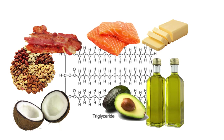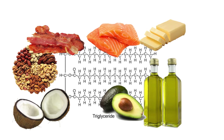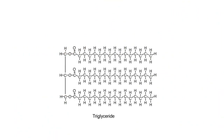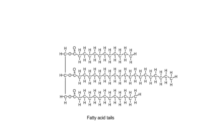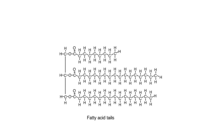And animal fats like butter, bacon fats, or the healthy fats found in salmon. These fats and oils are obviously vastly different from each other, but they are all made of triglycerides. The difference lies in the fatty acid tails, which can be different lengths depending on the fat or oil.